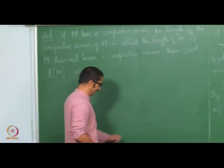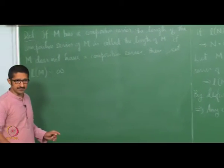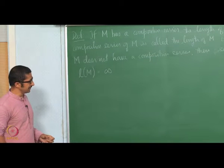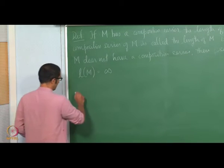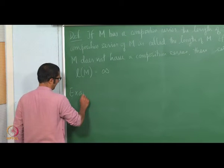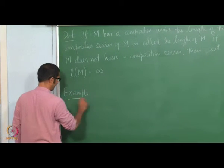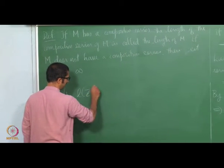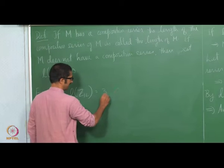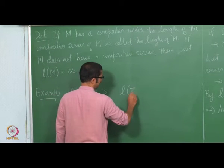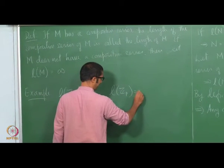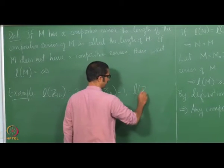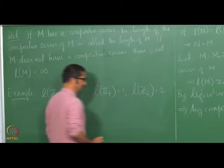We have already seen examples of modules with finite length. The length of Z_12 is 3 (from the earlier examples), and the length of Z_4 is 2.